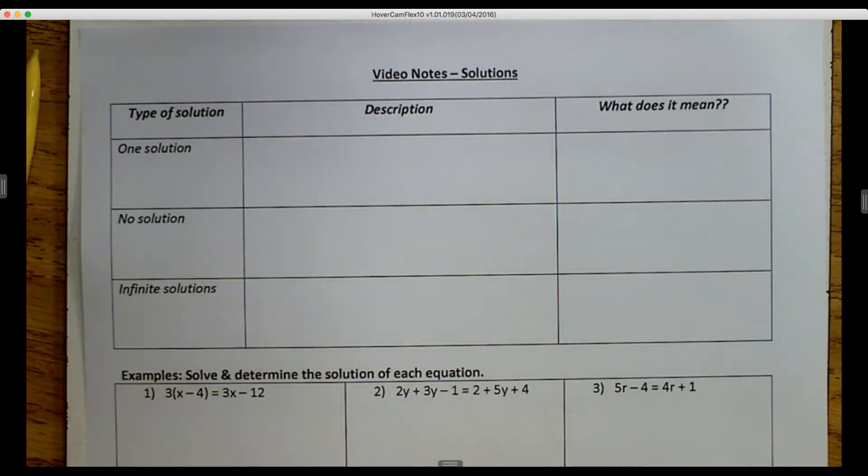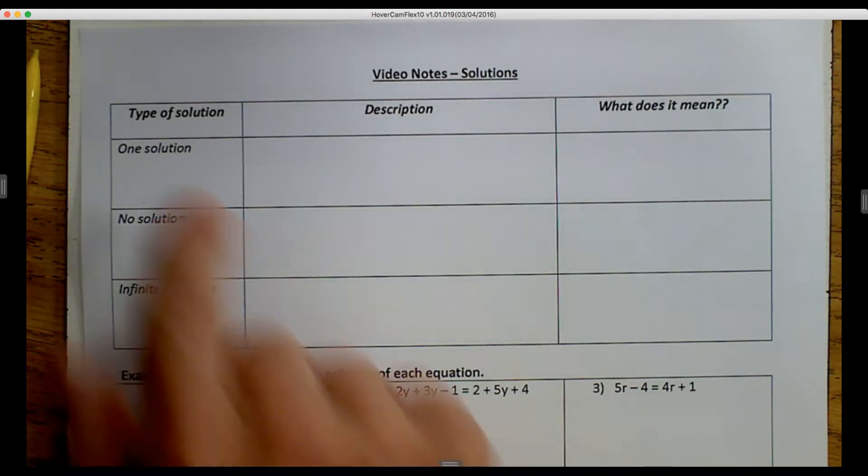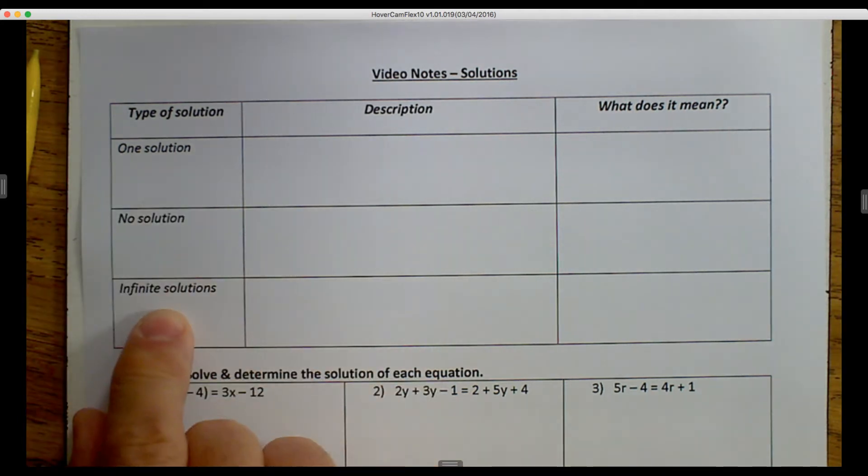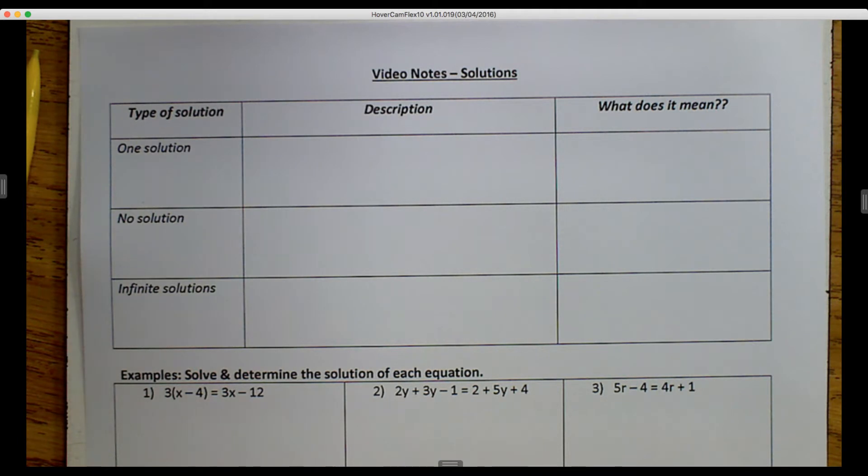There are three different types of solutions that we're going to talk about today. The first one is one solution, the second one is no solution, and the third one is infinite solutions. So let's talk about what they are and what they mean.